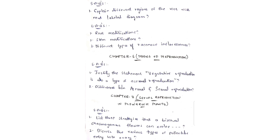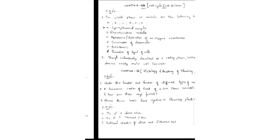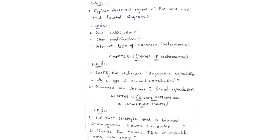To summarize the exam strategy: from Chapter 12, read all four LAQs on TS of dicot stem, TS of monocot stem, internal structure of dicot root and monocot root - one will appear compulsory, and possibly two from this chapter. From Chapter 7, read fertilization in angiosperms and mature angiosperm embryo sac - one will appear compulsory. From Chapter 5, read root modification, stem modification, and different types of racemose inflorescence. If you join the WhatsApp group via the link in the description box, you can get important VSAQs for all chapters. Thank you for watching - please like, subscribe, and comment any doubts in the comment box.